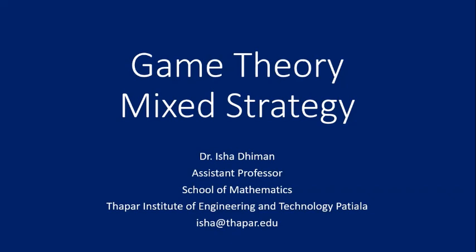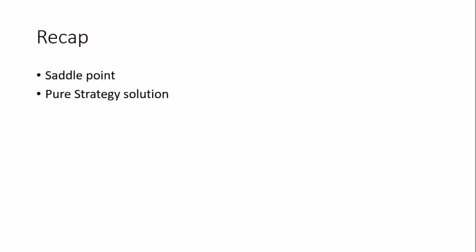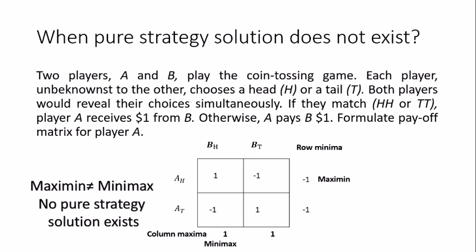In this video lecture we are going to look at mixed strategy solutions of certain problems in game theory. In the last lecture we already saw what we mean by a saddle point and under what conditions a pure strategy solution exists. In this example we formulated the payoff matrix and found that when the maximin and minimax are not equal, no pure strategy solution exists.